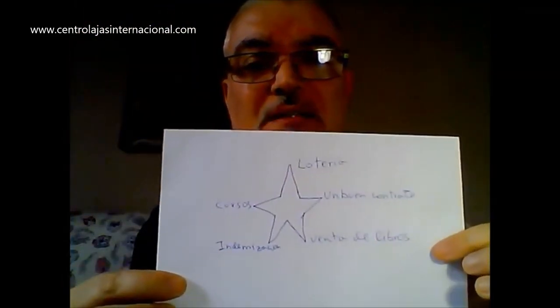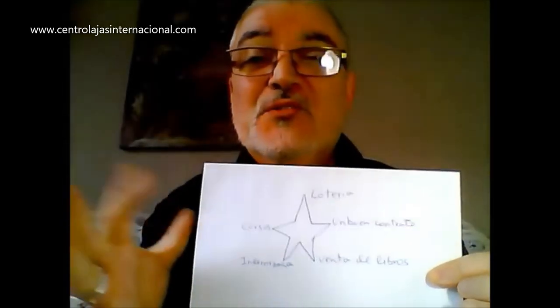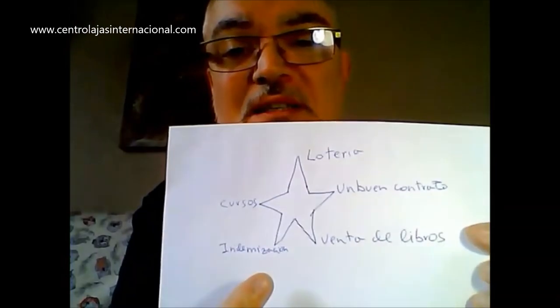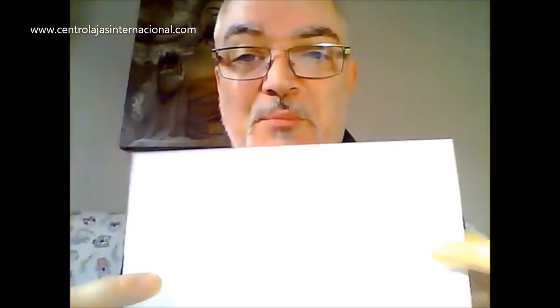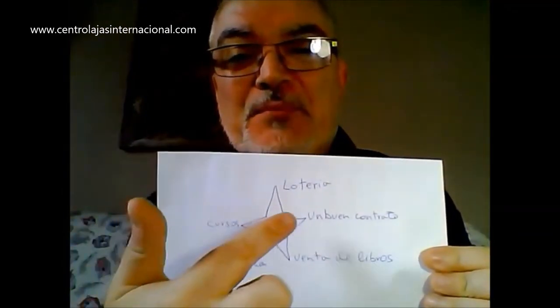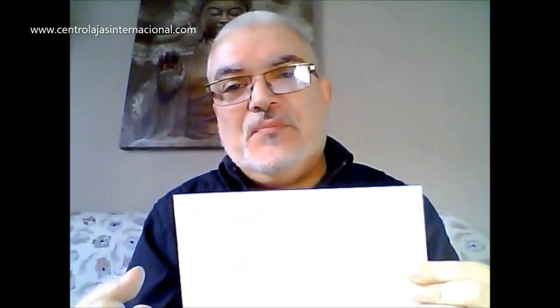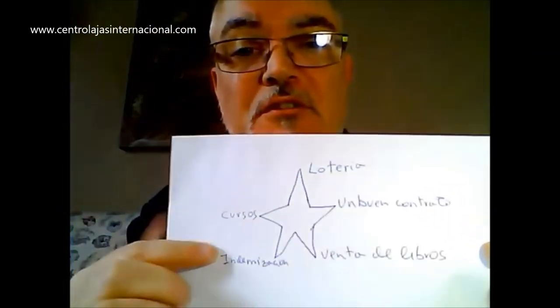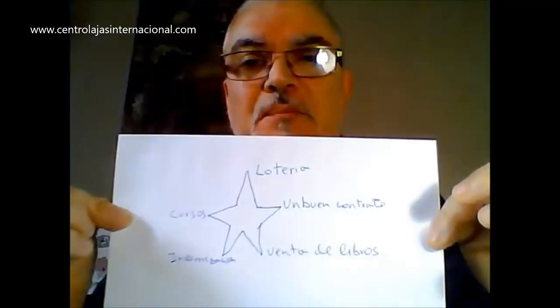Y en el frente tenemos que dibujar una estrella de cinco puntas, lo mejor que podáis — a mí no me ha salido muy bien, pero no es importante. Y ahí, en cada punta — vuelvo a repetir, son ejemplos, esto es un sobre de ejemplo, no es mi sobre — tenéis que poner cómo va a llegar ese dinero a vuestra vida. No podemos pensar que el dinero viene de la nada. Tienes que decirle al universo de qué formas posiblemente pueda venir ese dinero que pides mensual. Por ejemplo, yo he puesto: lotería, un buen contrato laboral, venta de libros, una indemnización o una herencia, haciendo cursos. Es decir, de qué formas reales crees que va a llegar ese dinero que quieres al mes.